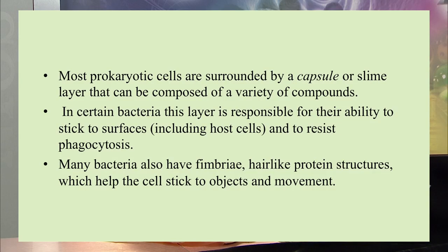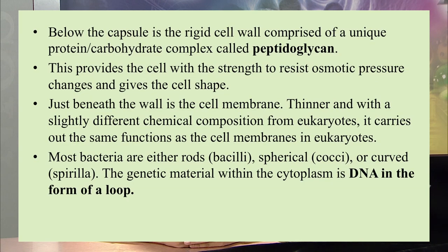Bacteria are of most concern among prokaryotic cells. Some features of bacteria include being surrounded by a capsule or slime layer made up of a variety of components. This layer is responsible for the ability to stick to surfaces, which helps bacteria resist the phagocytic process. Many bacteria also have fimbriae — hair-like protein structures that help them stick to surfaces and aid movement. The cell wall of bacteria is made up of a carbohydrate-protein complex called peptidoglycan, which provides strength to resist osmotic pressure changes and gives shape to the organism.